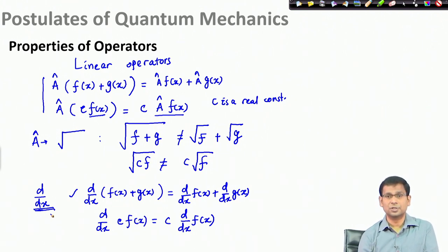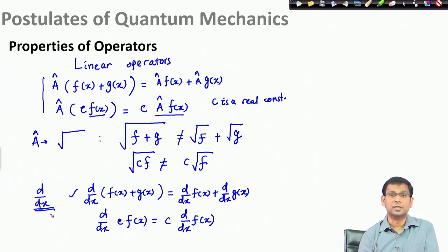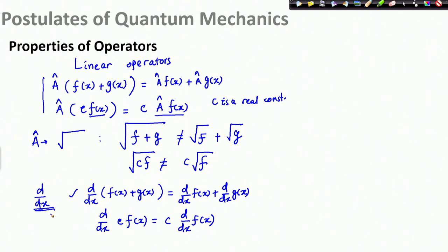To summarize where we are: the first postulate suggested that there exists a wave function which contains all the information, and the second postulate told us how to get some information. The second postulate's recipe is that if you want to obtain some idea about a particular classical observable, then find the quantum mechanical operator that corresponds to it, because quantum mechanics guarantees that for every classical observable there exists a quantum mechanical operator. We will now continue our discussion to see how operators and functions have a relation with each other.